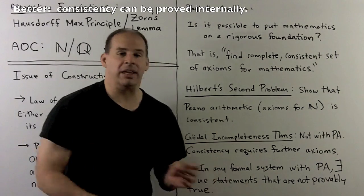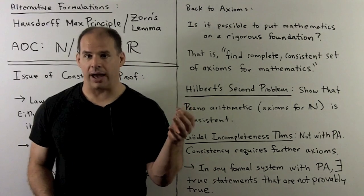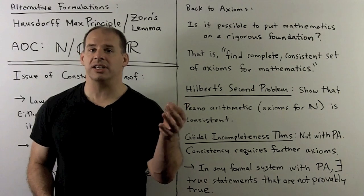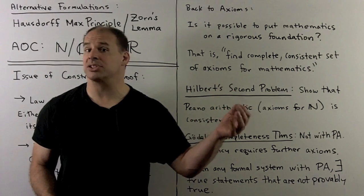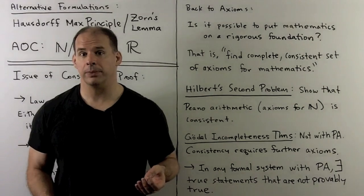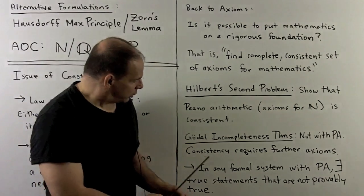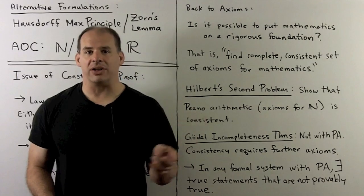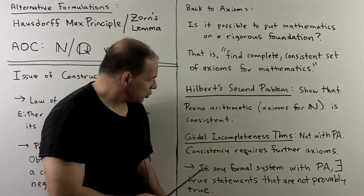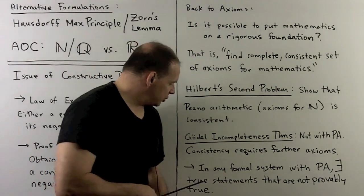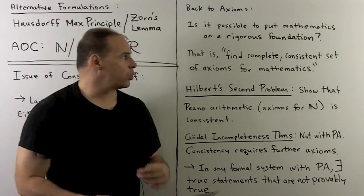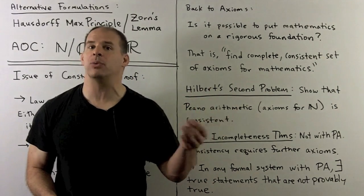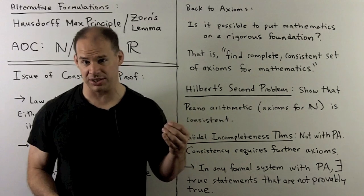Gödel also says in any formal system with the Peano axioms, there are going to exist true statements that are not provably true. That's going to kill this question here about completeness. We always have to take on more axioms if we insist on being able to prove consistency.